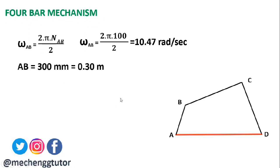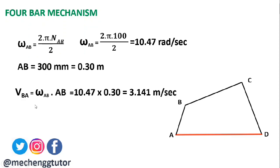We convert length AB from mm into meters to simplify calculations — using meters results in smaller, easier digits. The velocity of point B is: V_B = omega_AB × AB = 10.47 × 0.3 = 3.141 meters per second. The linear velocity of AB is the same as the linear velocity of point B since B lies on link AB. We will now use this to find the angular velocity of link BC using instantaneous centers.